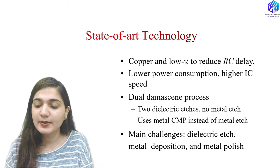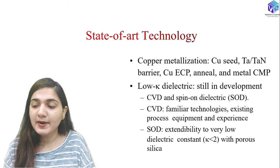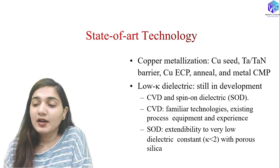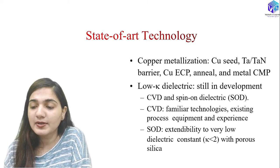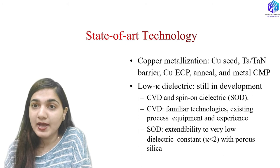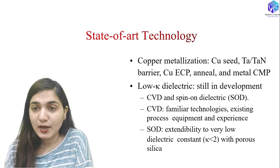For copper metallization, the steps are: copper seed layer deposition, then tantalum or tantalum nitride barrier layer deposition, then copper electrochemical plating for bulk copper deposition, followed by annealing and CMP. This results in many increased process steps compared to traditional aluminium metallization.